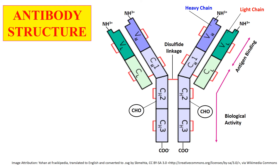In case of the heavy chain, there may be three or four constant regions denoted by CH1, CH2, and CH3. The carbohydrate moieties are also attached to the Fc — fragment crystallizable — portion of the antibody, which is responsible for the biological activity of the antibody. From the variable region, the antigen binds to the antibody, and after binding, the response shown by the antibody is generally through this constant region, which is why it is also known as the biological activity region.